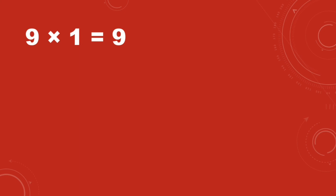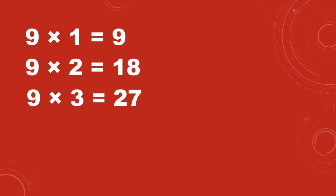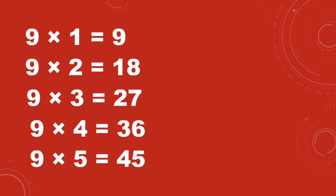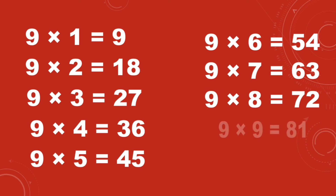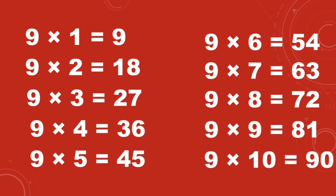Nine ones are nine, nine twos are eighteen, nine threes are twenty-seven, nine fours are thirty-six, nine fives are forty-five, nine sixes are fifty-four, nine sevens are sixty-three, nine eights are seventy-two, nine nines are eighty-one, nine tens are ninety.